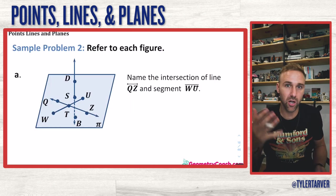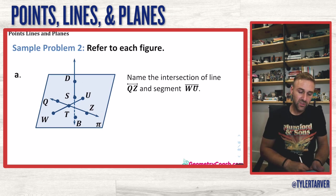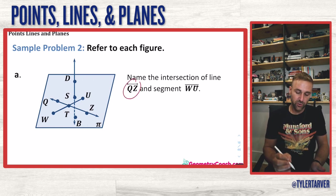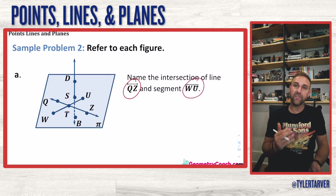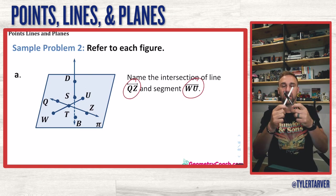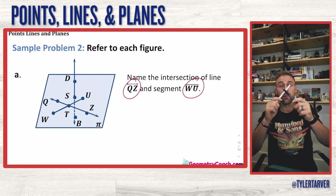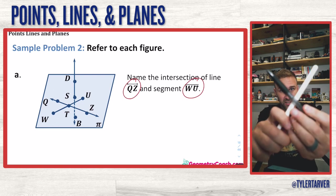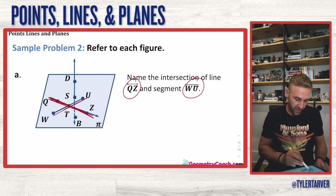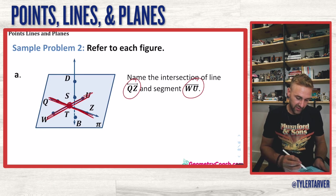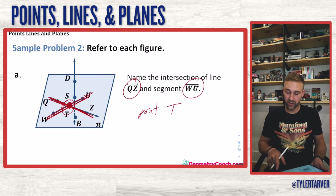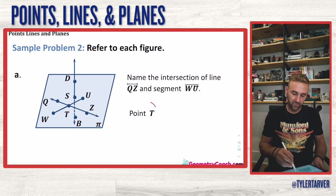Let's do some examples based on all the stuff we've learned. Name the intersection of line QZ and segment WU. Since two lines intersect at a point, I'm looking for the one spot where these two cross. QZ is right here and WU is right here, and the point where they intersect in the middle looks like point T. Remember, uppercase letters when you label points — and we got it: point T.